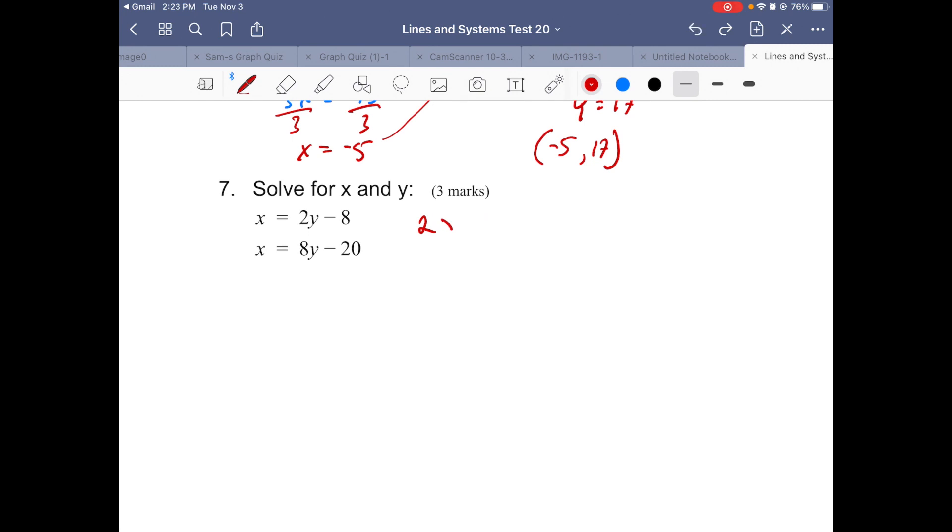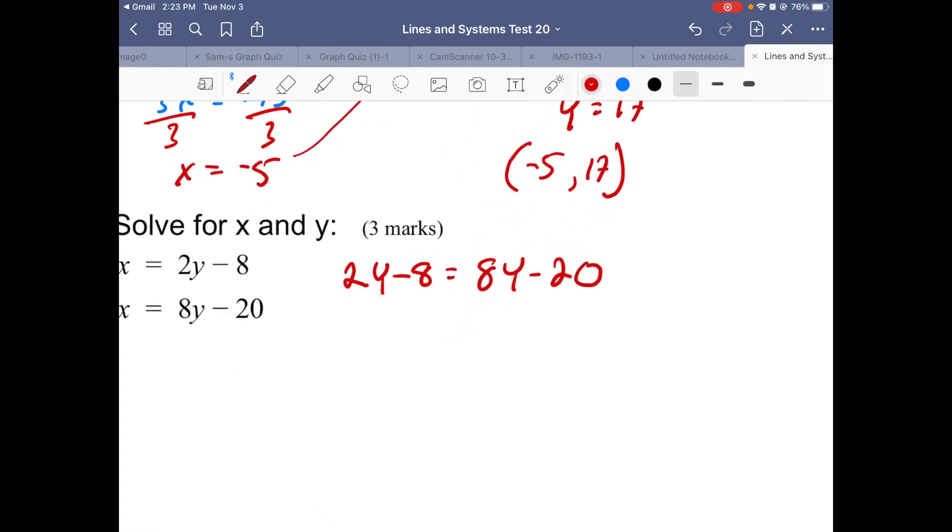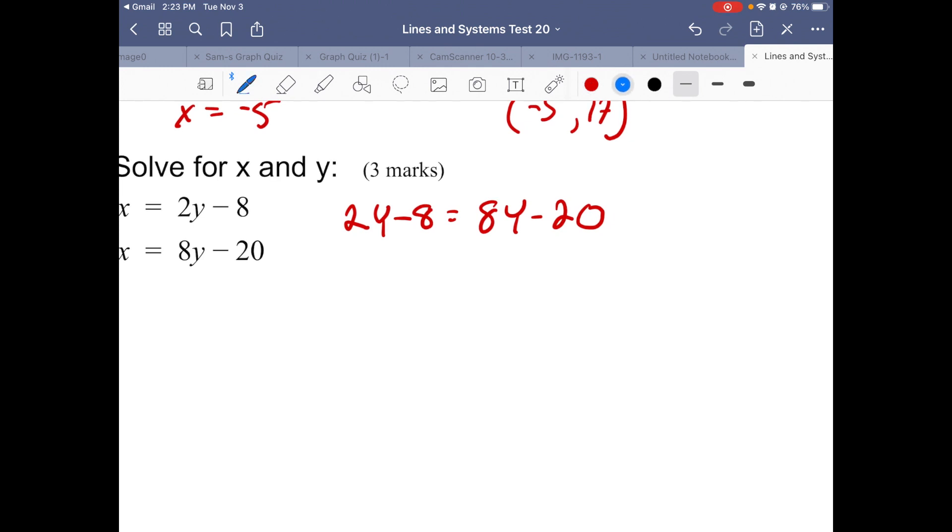I'm going to write 2y - 8 = 8y - 20. I'm going to get all the y's on one side. We have more y's on the right, so it's easier to get rid of those two y's on the left. You want to get rid of the y's where you have less of them, so minus 2y minus 2y ensures you end up getting a positive coefficient.